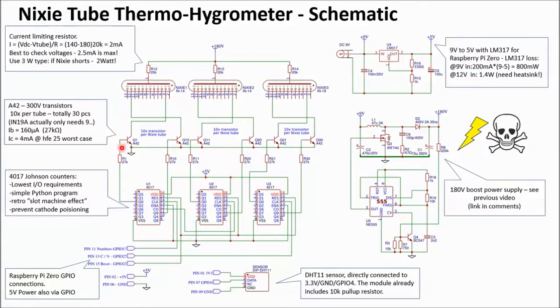So here I use 30 pieces of A42 300V transistors. These transistors pull down the cathode of the Nixie tube. So if this transistor Q1 is on, this Nixie tube will show a 0. The same for this one. And for this one, this is the IN19A tube, which shows the symbols. We only need to have the centigrade and the percentage symbol, but I connected all symbols. The transistors are driven by 27k base resistors, and they have a worst case current amplification of 25. So that's okay for a collector current of 4mA.